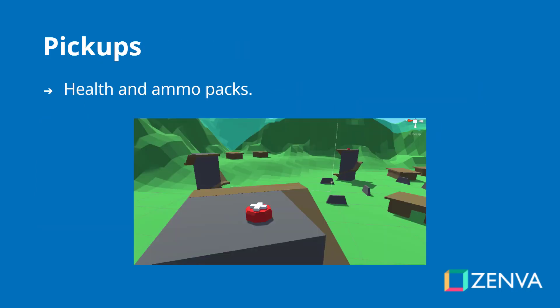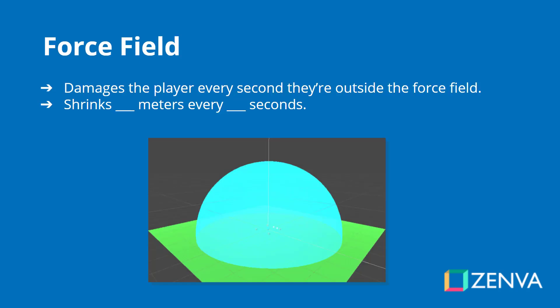We will also have pickups — health and ammo packs that the player can find around the map. And just like any battle royale game, we have a force field that will encapsulate the players and force them into smaller and smaller areas on the map. This will damage the player every second or so while they are outside the force field, and it will shrink every so many metres every so many seconds. This is a very customisable force field that we will be creating.